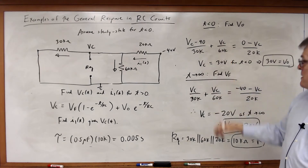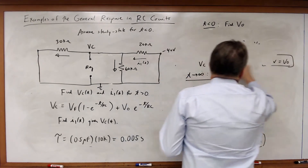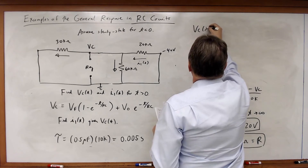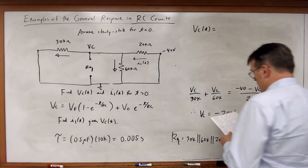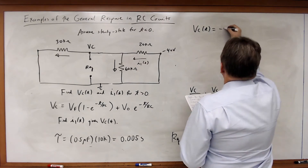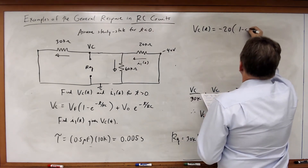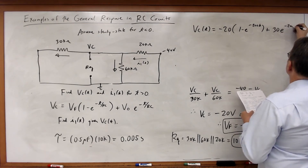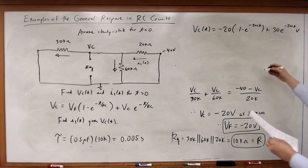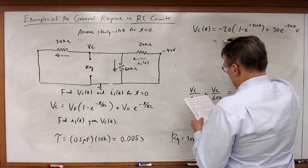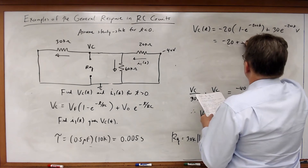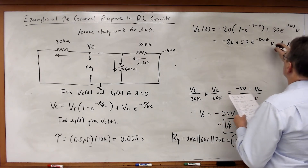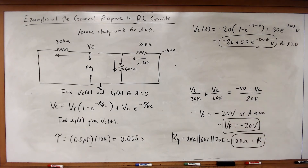Plugging into the general solution, VC(t) equals my final condition minus 20 times (1 minus e to the minus 200t) plus my initial condition 30 times e to the minus 200t volts. Combining the exponential terms gives VC(t) equal to minus 20 plus 50 times e to the minus 200t volts, for t greater than or equal to zero. And there's my answer for VC(t).